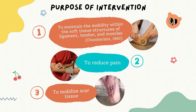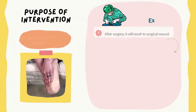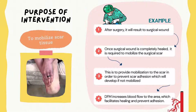What is the purpose of deep friction massage? According to Chamberlain in 1982, the aim of deep friction massage is to maintain the mobility within the soft tissue structures of ligament, tendon and muscles. It also helps in reducing pain and mobilizing scar tissue. For example, after surgery, it will result in a surgical wound. Once the wound is completely healed, it is required to mobilize the surgical scar to provide mobilization and prevent scar adhesion which will develop if not mobilized.